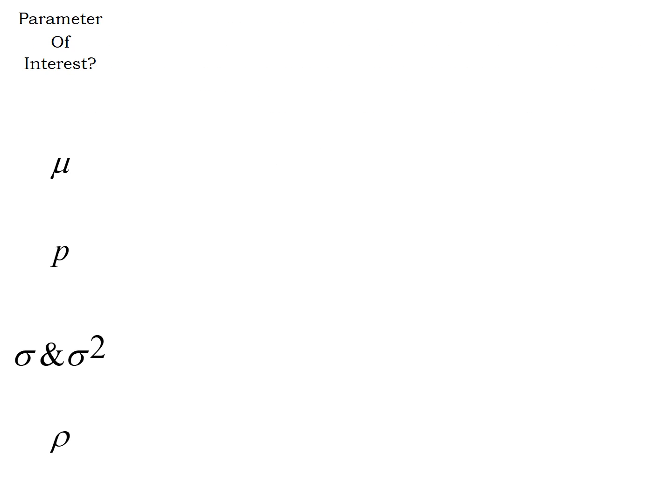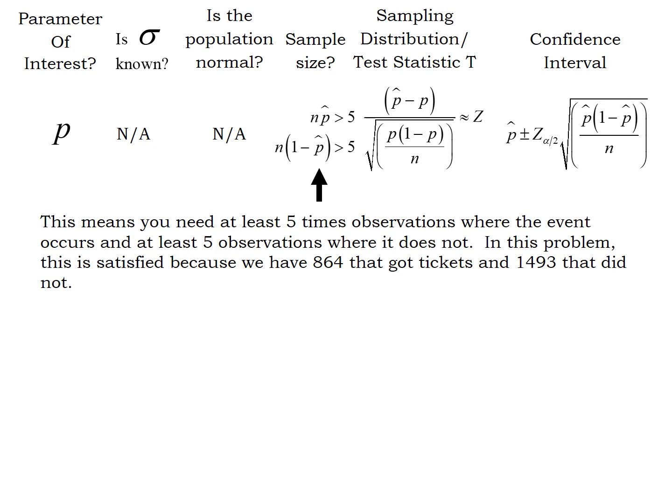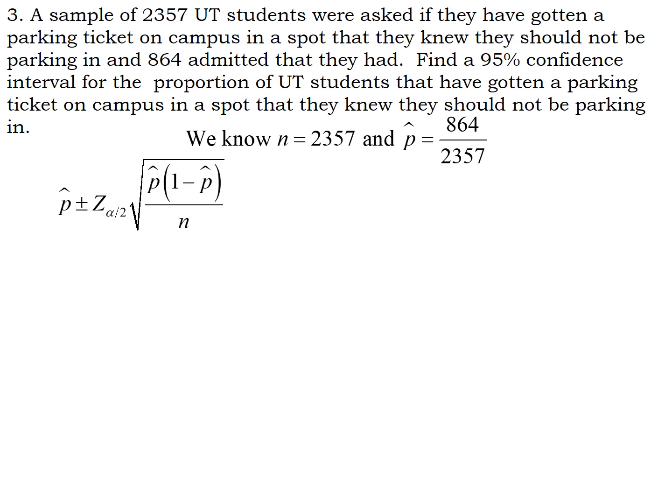So parameter of interest, once again, is P. Whether or not we know sigma or the population is normally distributed don't really apply. Our sample size conditions, we need at least five people who have and five who have not gotten parking tickets where they shouldn't be parking. So we are, once again, going to be using this same confidence interval formula we have on the last two problems.